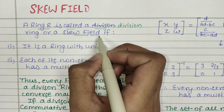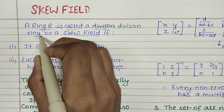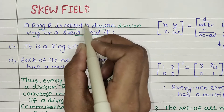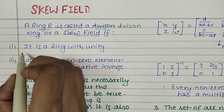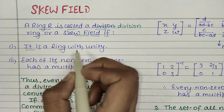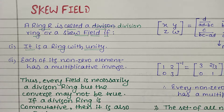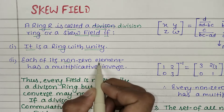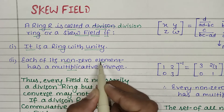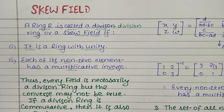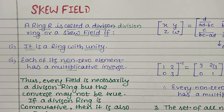This structure is also called a skew field, and the other name for skew field is division ring. A ring becomes a skew field or division ring when: first, it is a ring with unity — the ring must have a multiplicative identity; and second, each of its non-zero elements must have a multiplicative inverse existing in that ring.